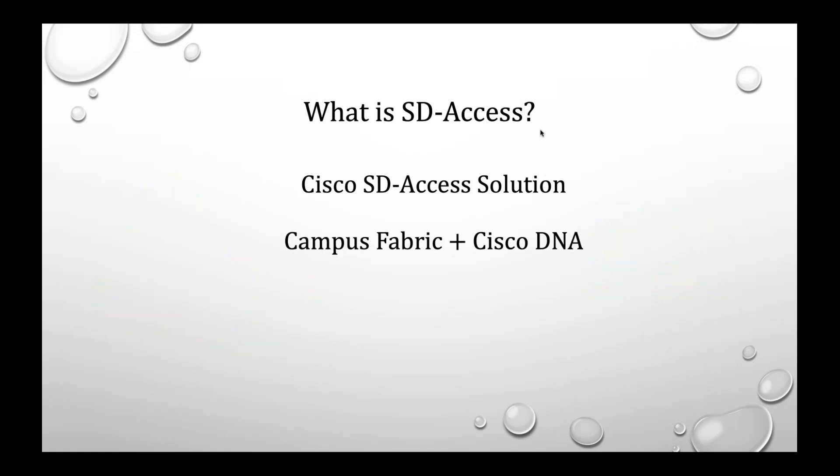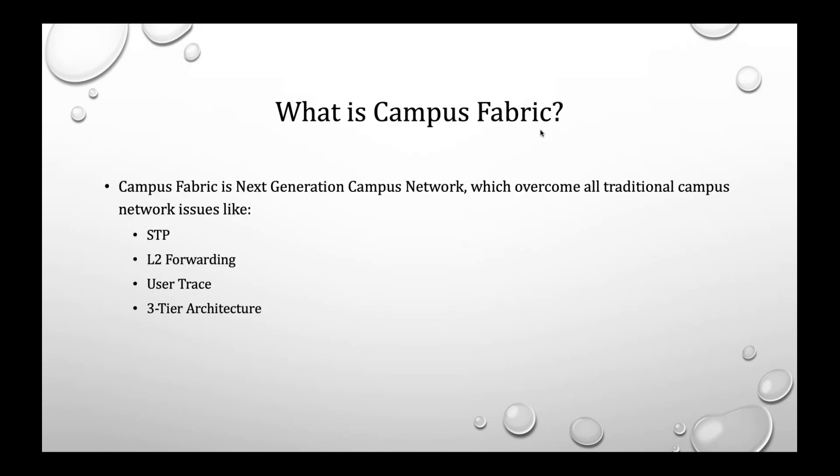Cisco SD Access is nothing more than your campus fabric plus Cisco DNA. These two terms may not be familiar to many of you, so I'll explain them separately. Campus fabric, in easy words, is a next-generation campus network which overcomes all traditional campus network issues like STP, layer 2 forwarding, user tracing, and the traditional three-tier architecture. In the data center we already moved to spine-and-leaf architecture, but we need to work on the enterprise network side as well.